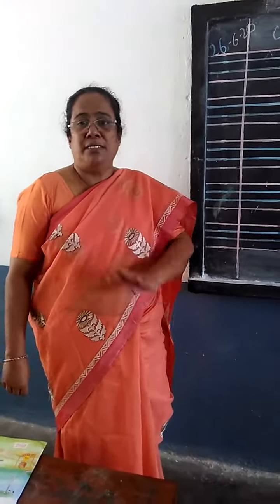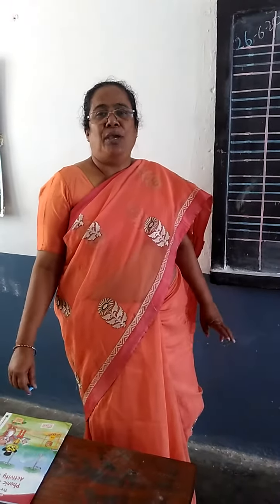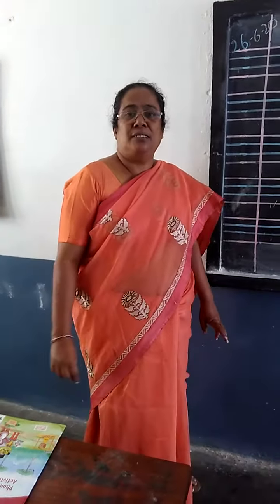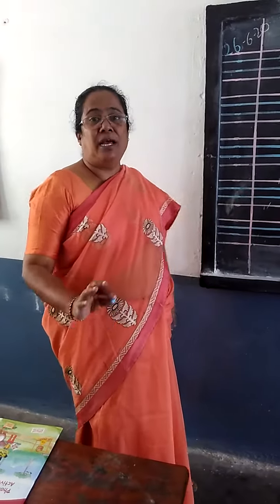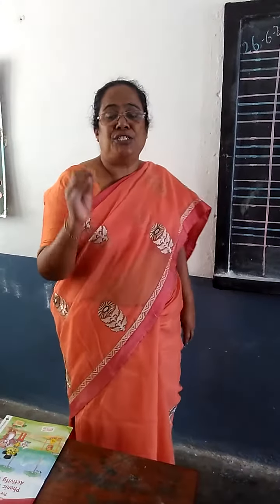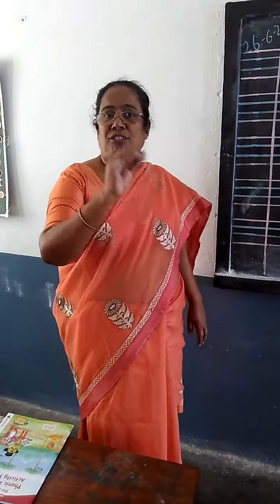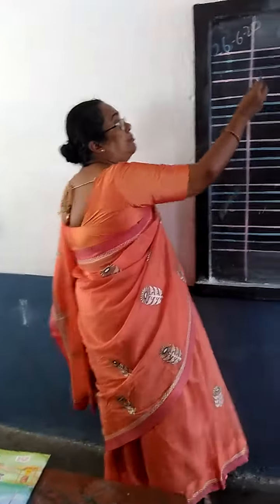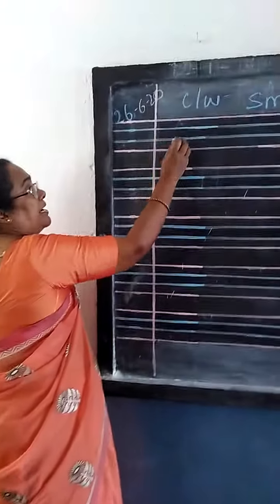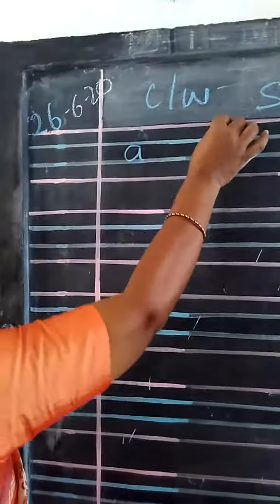You have done capital letters, all the 4 pages. Now we are going to write small letters A to Z. Repeat after me and write in your class workbook A to Z. Repeat after me, touch the blue line and write. A,